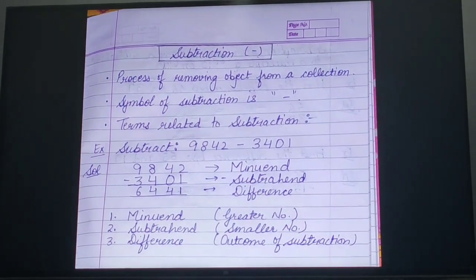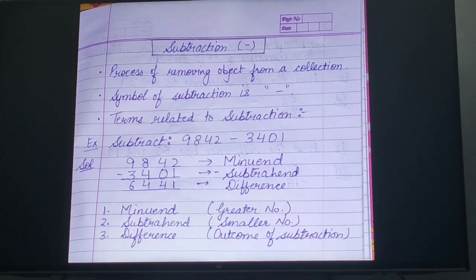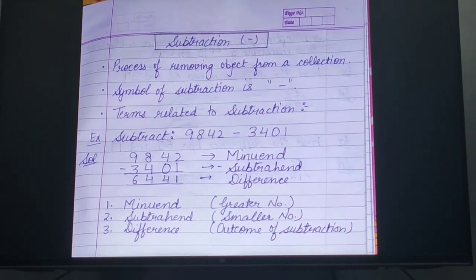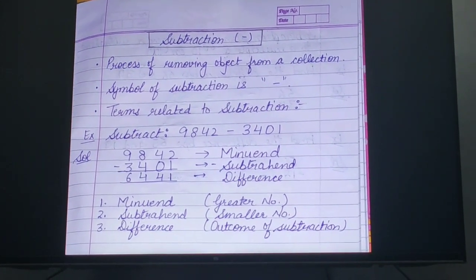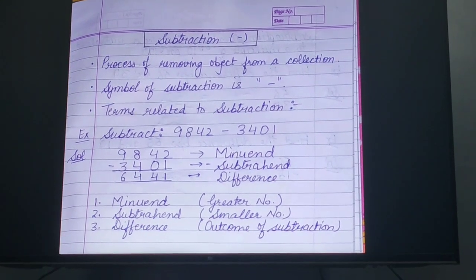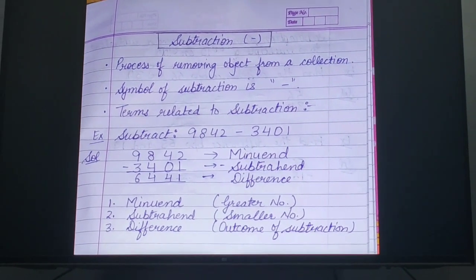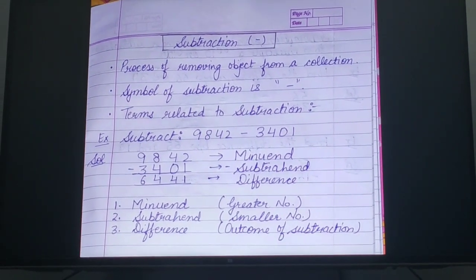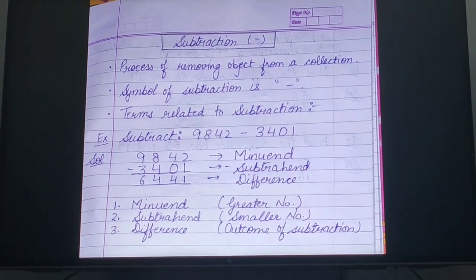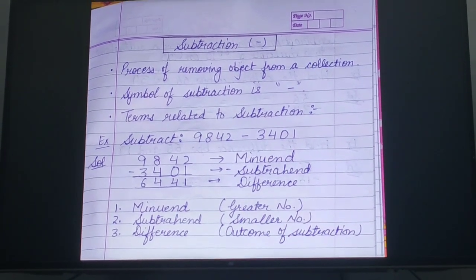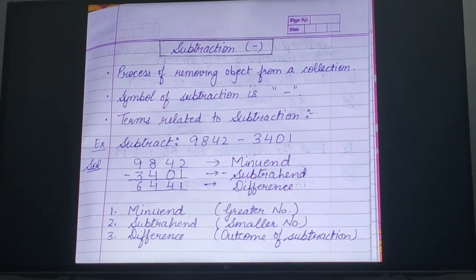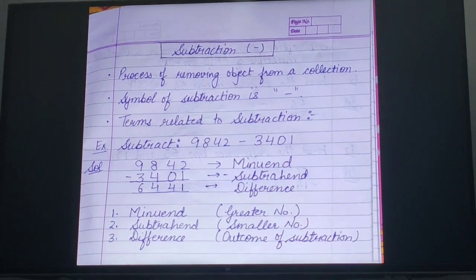Point 1: the process of removing objects from a collection is known as subtraction. To understand this statement I am going to recite part 2 of the story that I had started at the beginning of the addition chapter.